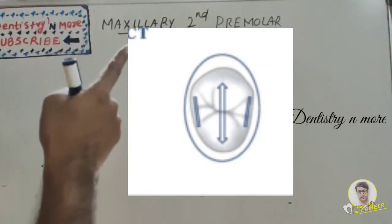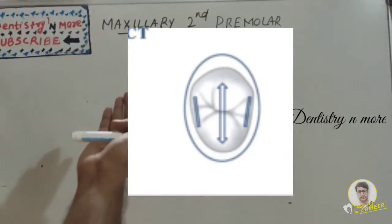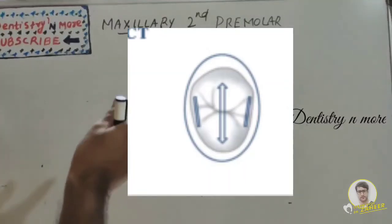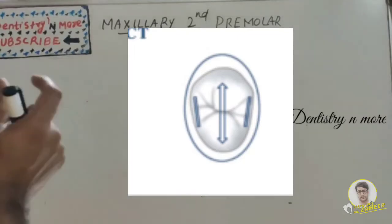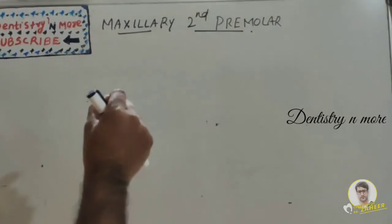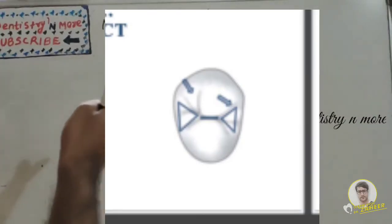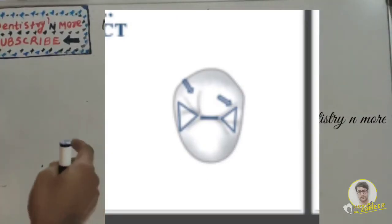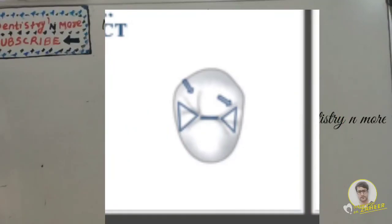For the occlusal aspect: the shape is oval or round with symmetry. Both cusps are the same size with a wide distance between them. Marginal ridges are thick, strong, and well developed. There is a short central groove with multiple supplemental grooves, and two triangular fossae that are close to each other — the distal triangular fossa is larger and deeper than the mesial triangular fossa.